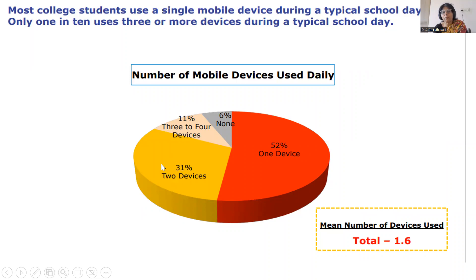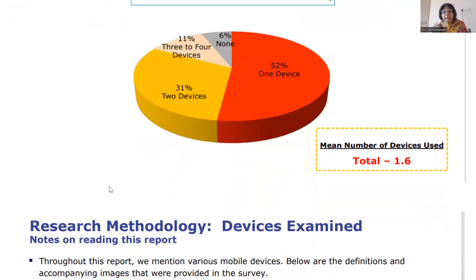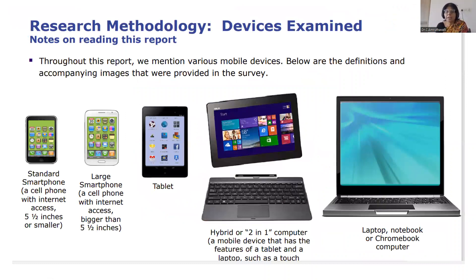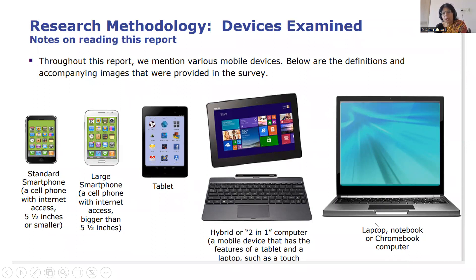More than 52% of the world youth — below 20 to 21 years — have at least minimum one device. The mean is 1.6 devices. In their questionnaire, what devices are students regularly using? A smartphone less than five and a half inches, a larger smartphone with internet facility and latest apps, tablets, hybrid laptops that can be used as both tablet and laptop, or a high-end Chromebook or Apple notebook or any other brand laptop. This is part of the Pearson survey.